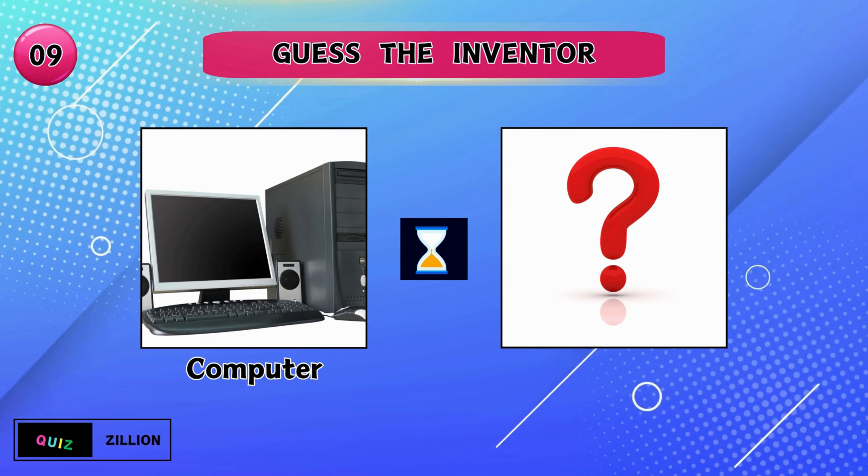Who is the inventor attributed with the creation of the microscope? Antony van Leeuwenhoek found the microscope. Who is the architect of the electric telegraph invention? Samuel Morse found the electric telegraph.